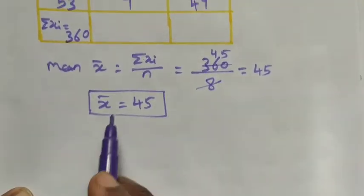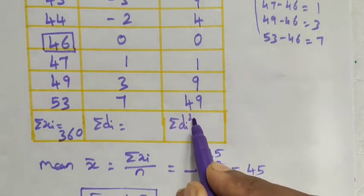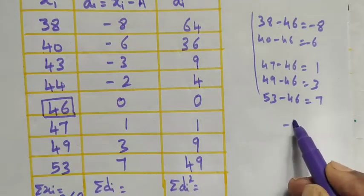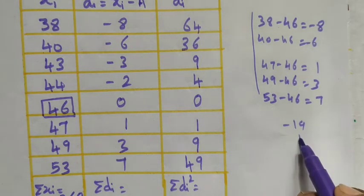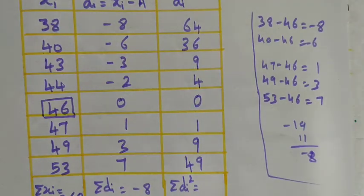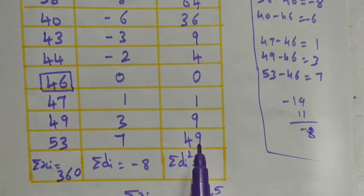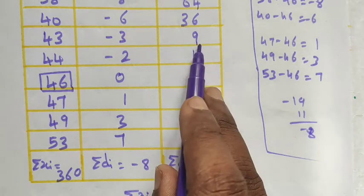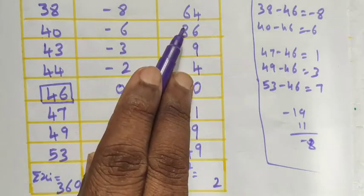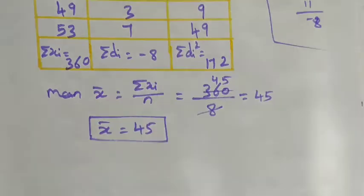Now we find the standard deviation. We need Σdi and Σdi². Adding the negative deviations: −8 + (−6) + (−3) + (−2) = −19. Adding the positive deviations: 0 + 1 + 3 + 7 = 11. So Σdi = 11 − 19 = −8. Adding all di² values: 64+36+9+4+0+1+9+49 = 172. So Σdi² = 172.